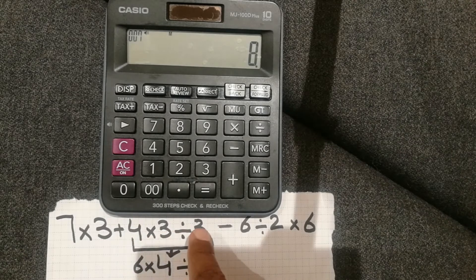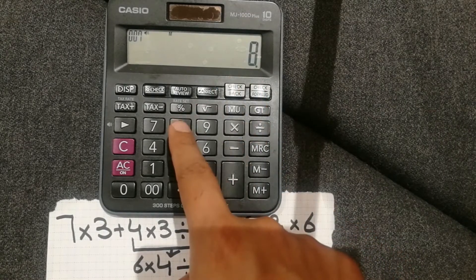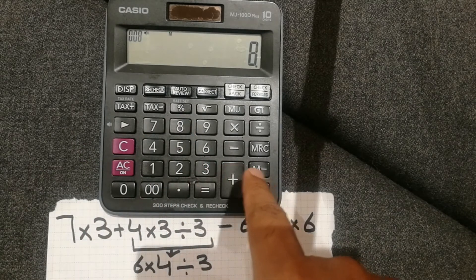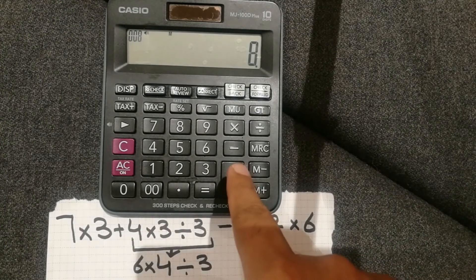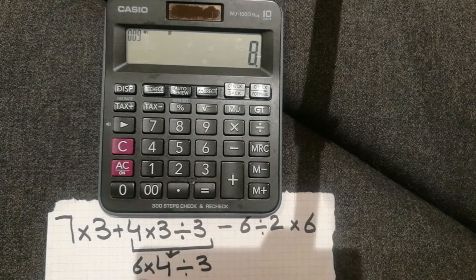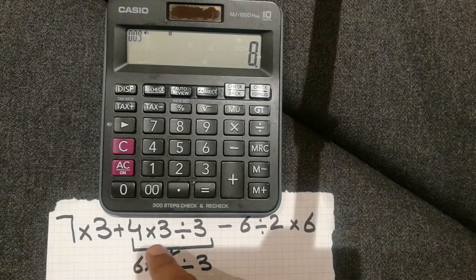I actually want to do the top equation but I mistakenly did the bottom one. The answer showing here is 8. To remove it, I press 8 again and then press the M minus button. By pressing M minus, this whole equation has been removed from the calculator memory — there is no more this equation stored.